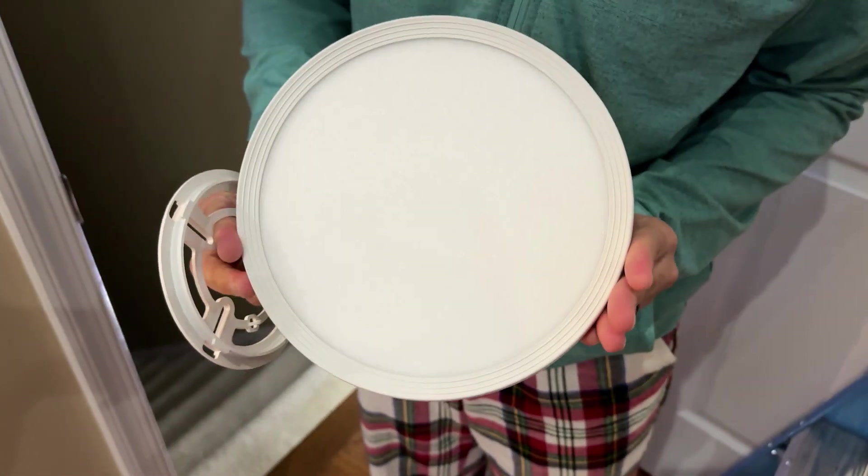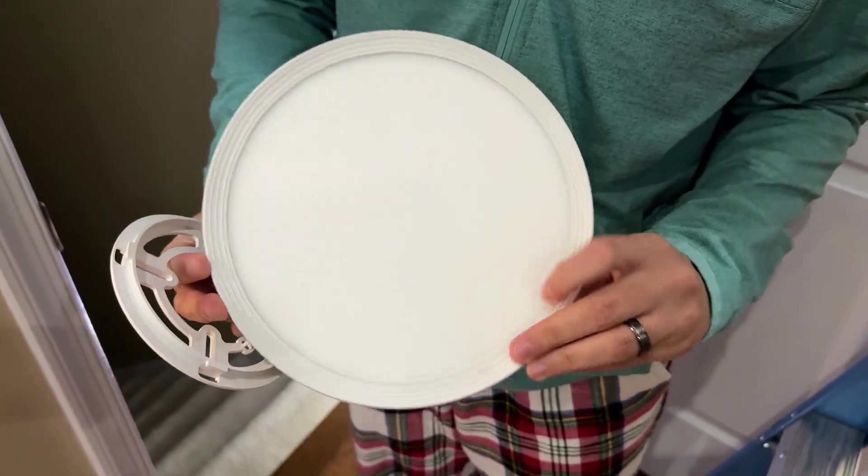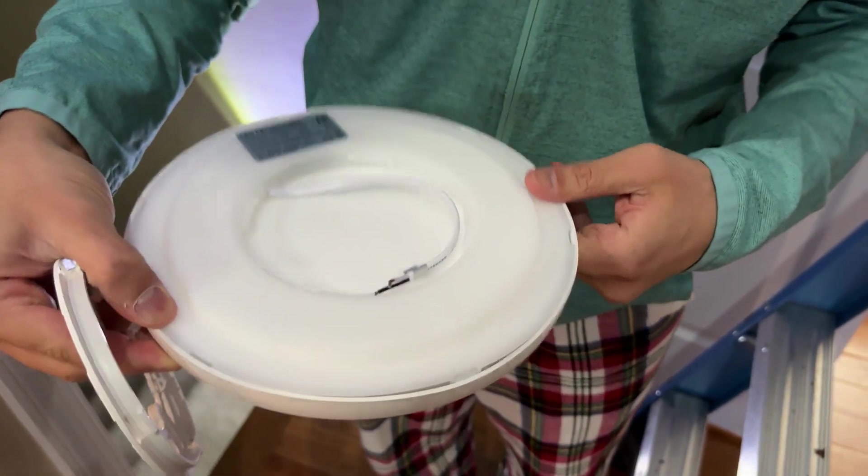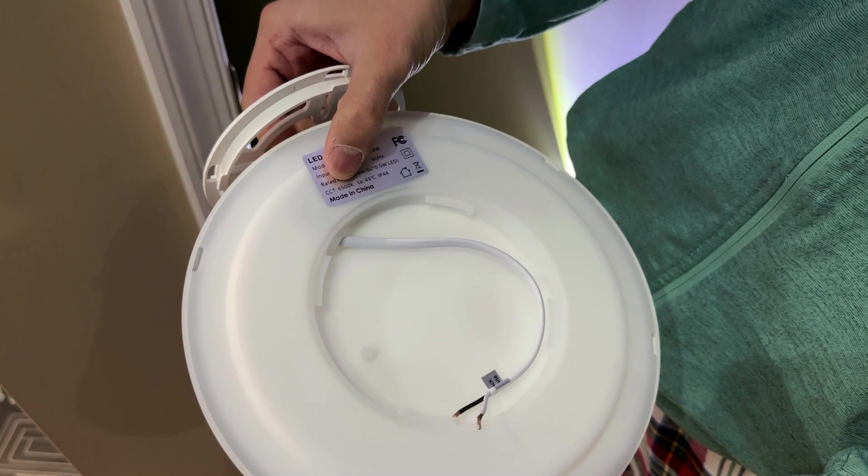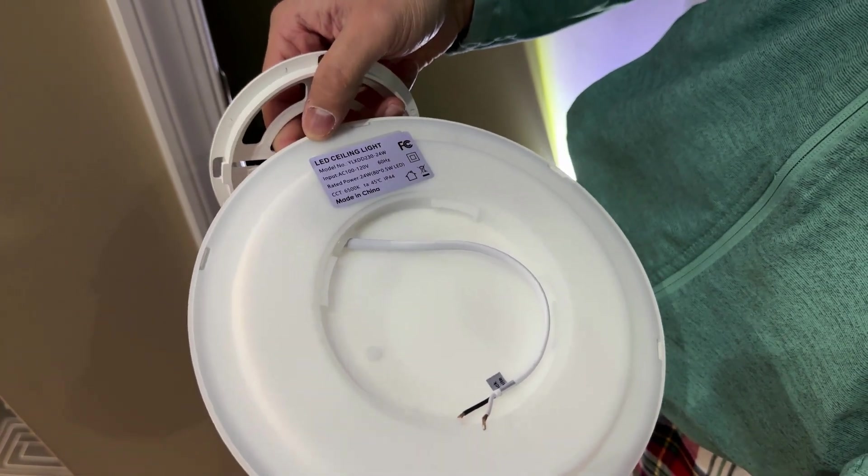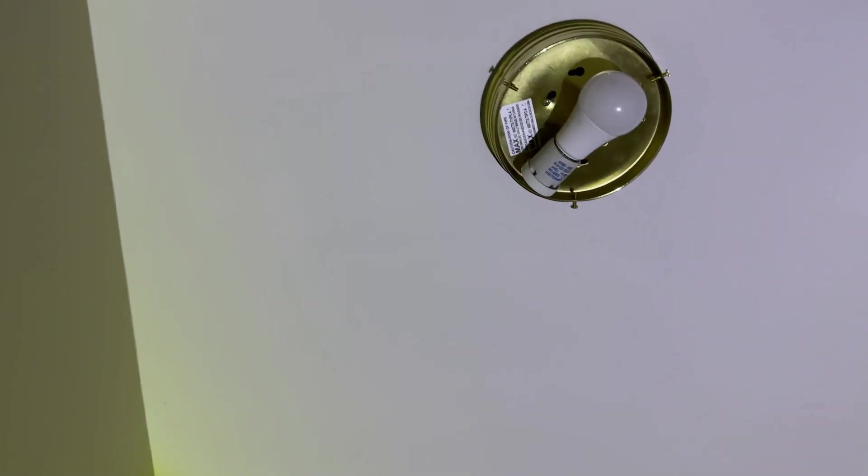As far as the light itself, this is what it looks like. It's pretty minimalistic and pretty bright. Let's put it on and show you what it looks like. 6500K, that's the color temperature. You can get it in different color temperatures.